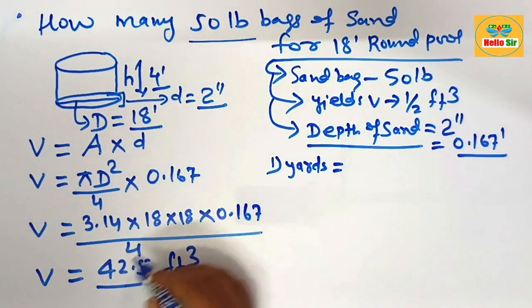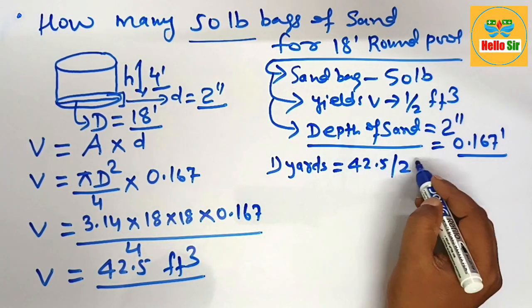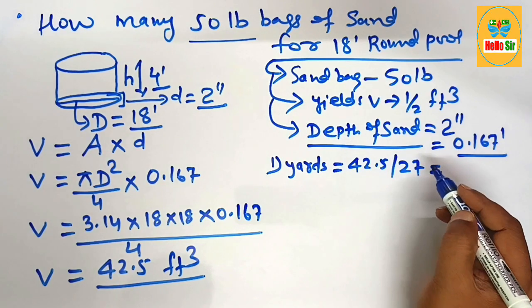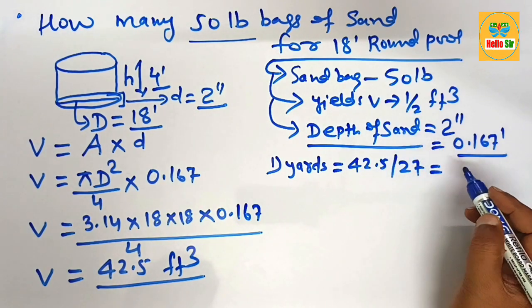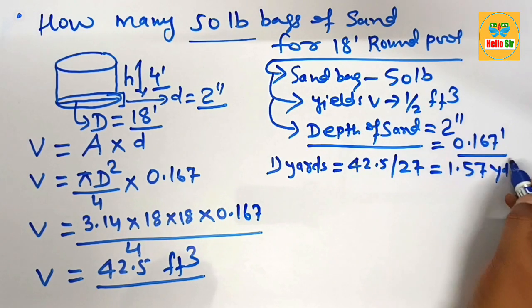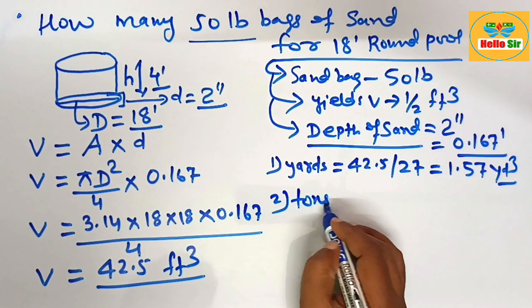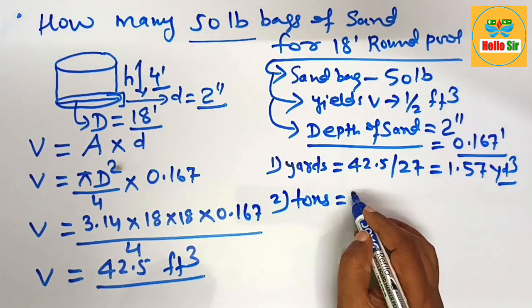Just divide cubic feet by 27 to calculate how many yards of sand are required for an 18-foot round pool. This equals about 1.57 cubic yards. If you want to calculate the tons of sand, just multiply the cubic yards.